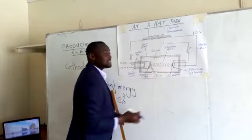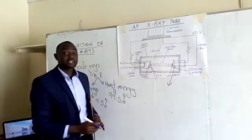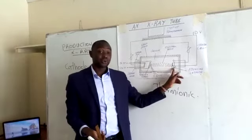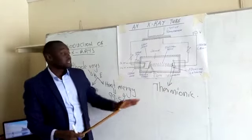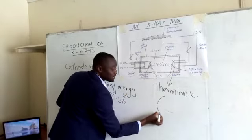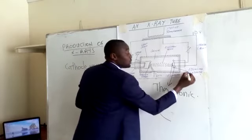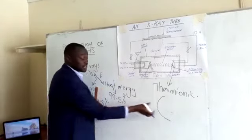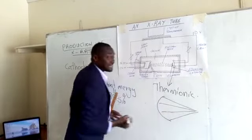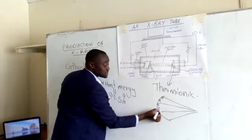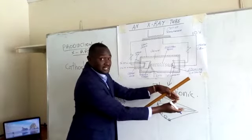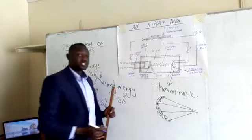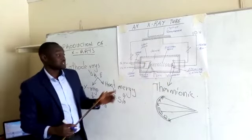This low voltage heats the cathode, which produces electrons through thermionic emission — just as in a CRO, we need a metal with a low work function. The cathode is shaped concave, which is why we call it the focusing cathode. Just as a concave reflector converges light, the concave shape focuses the electrons produced by thermionic emission onto the metal target.